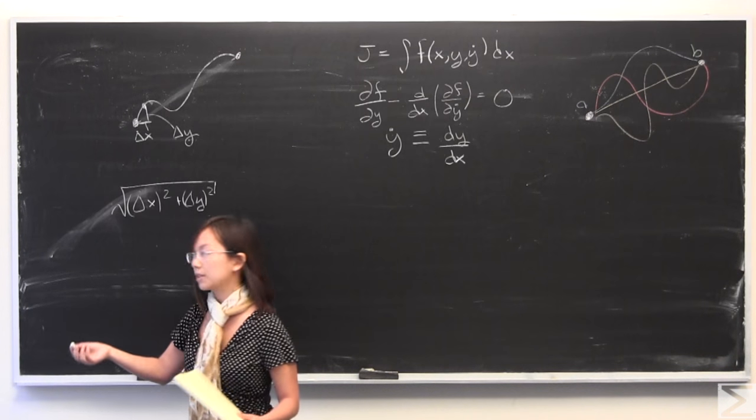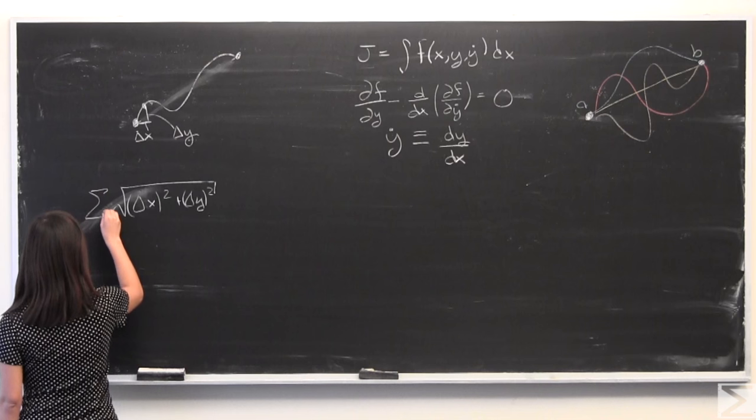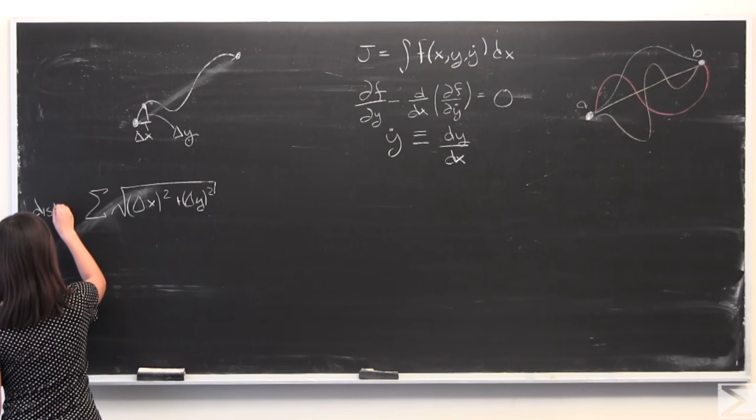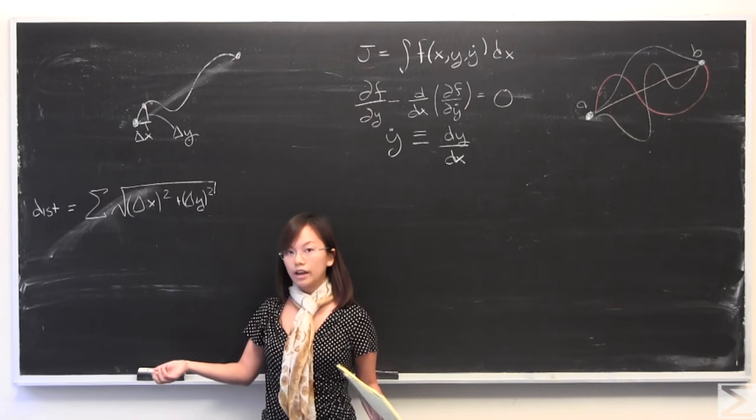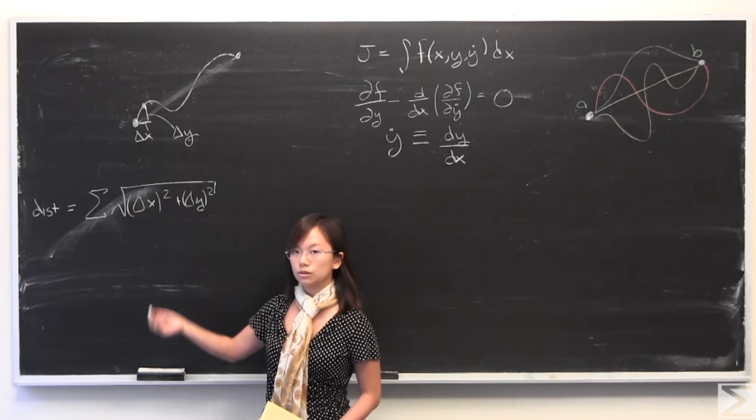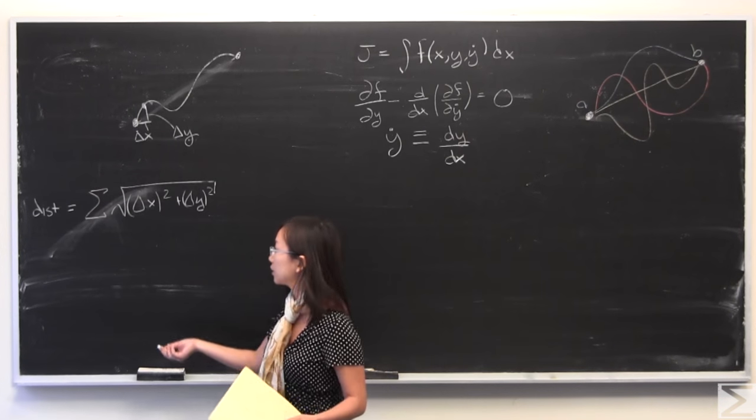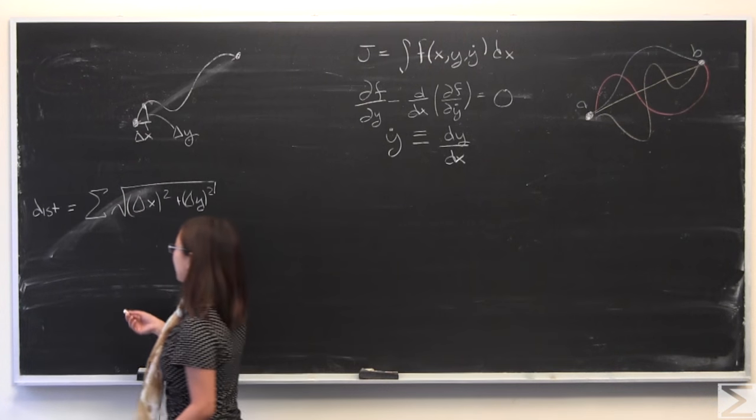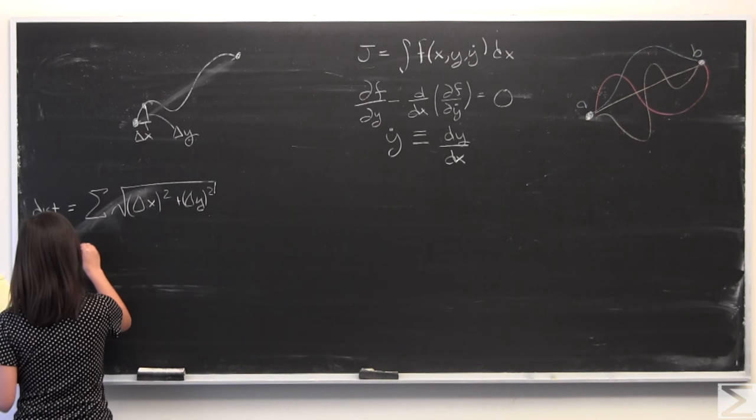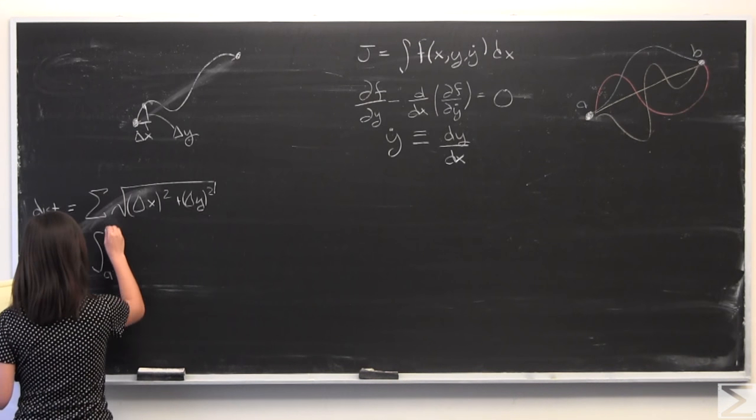And I'm going to say, we're going to sum this up. Call this equal distance. And then I'm going to let delta x and delta y become infinitely small. And then we can turn this sum into an integral. If you've taken a Calc 2 class, you might have seen this before. I'm going to let it run from A to B.